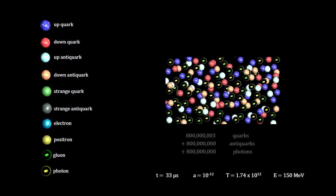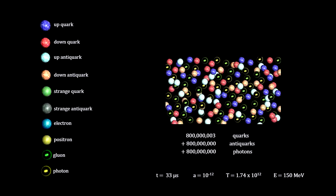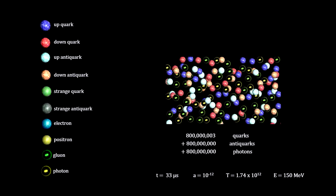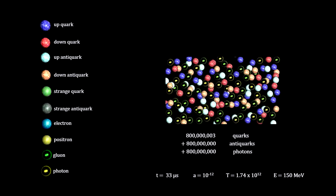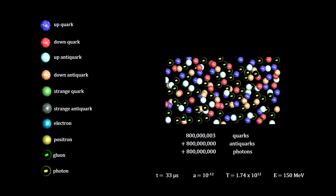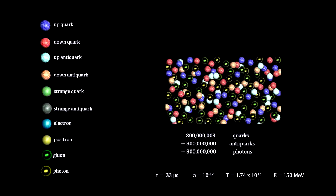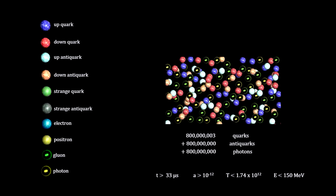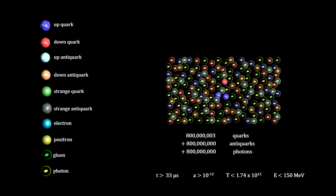Now, suppose nature had a very tiny tilt in favor of quarks over antiquarks. For example, let's say that for every 800,003 quarks, there were only 800,000 antiquarks. Then, when the universe cooled to the point that quark-antiquark pairs were no longer being produced, all the existing quarks and antiquarks would annihilate each other.